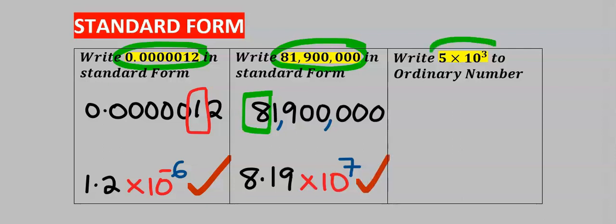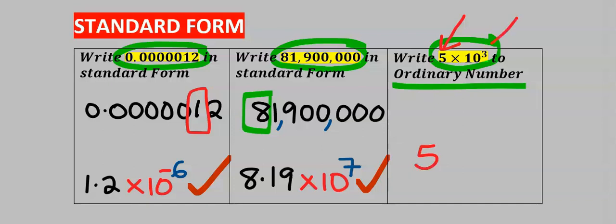Next, write this standard form to an ordinary number. Step number one: consider the first significant number — here it is five. Next, consider the power of 10 — here it is three, and the three is also positive.